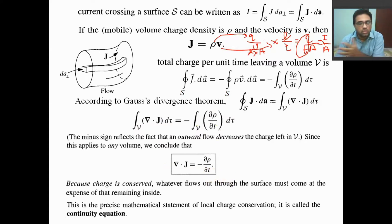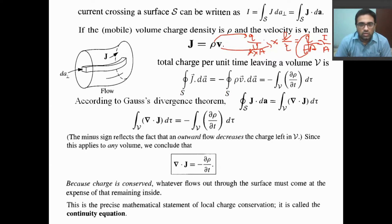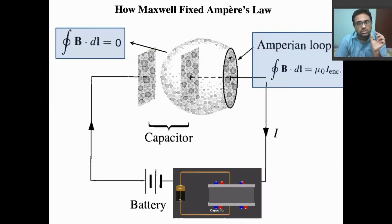Whatever charge flows out through a surface must come out at the expense of the remaining charge inside the volume. This is the continuity equation. From this we will understand what is the problem in Ampere's law. There is some problem in Ampere's law if we consider a capacitor in a circuit.